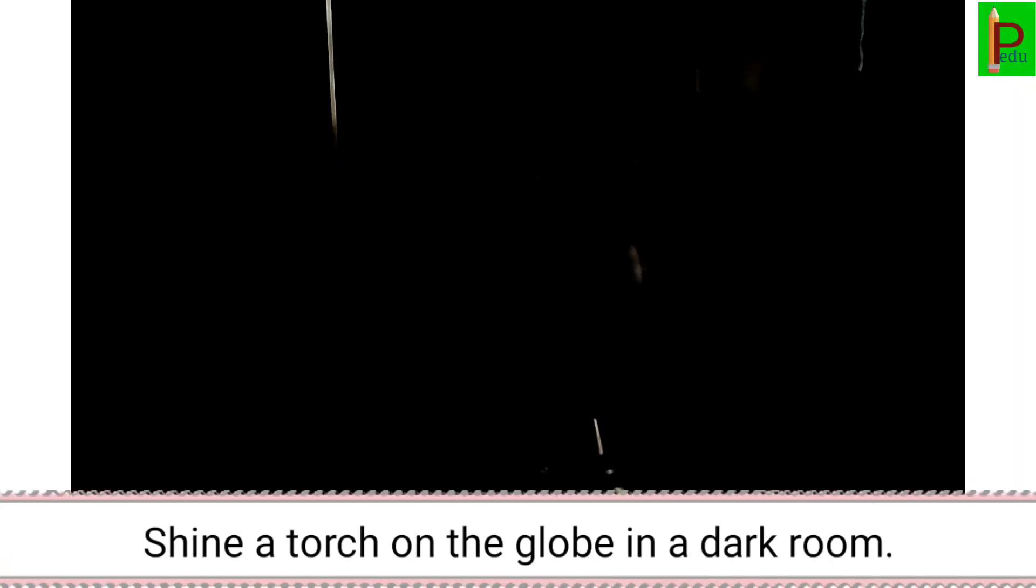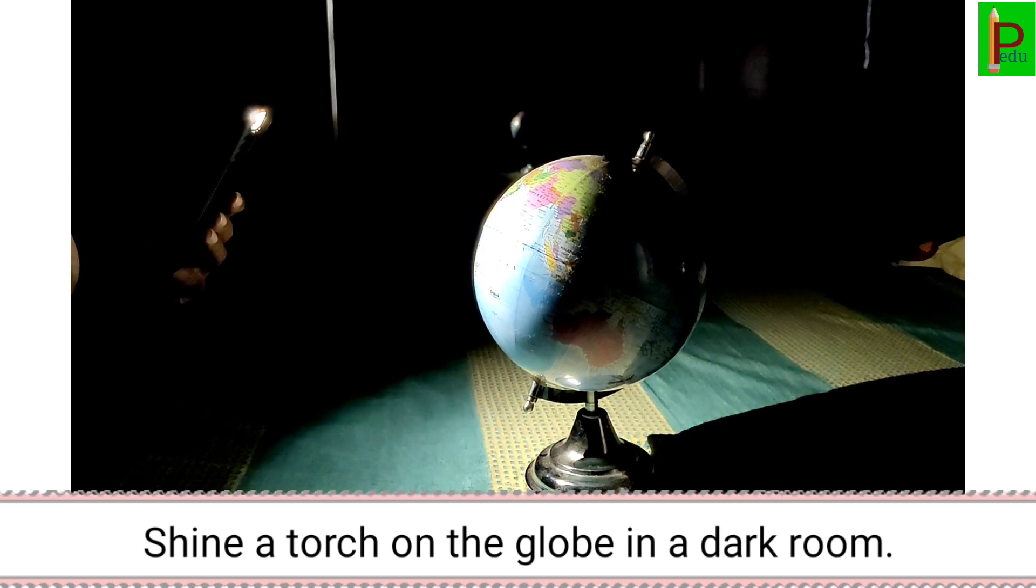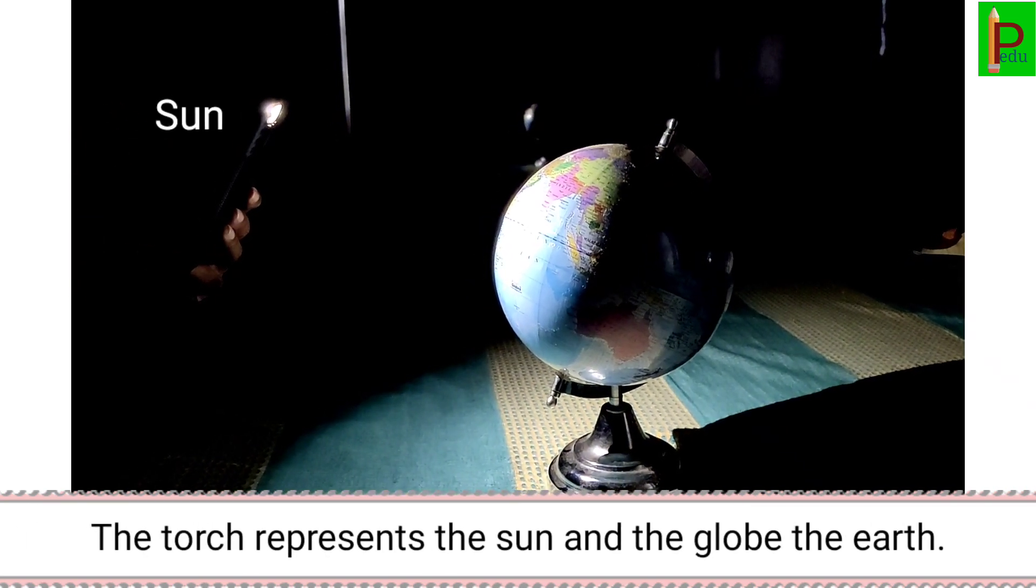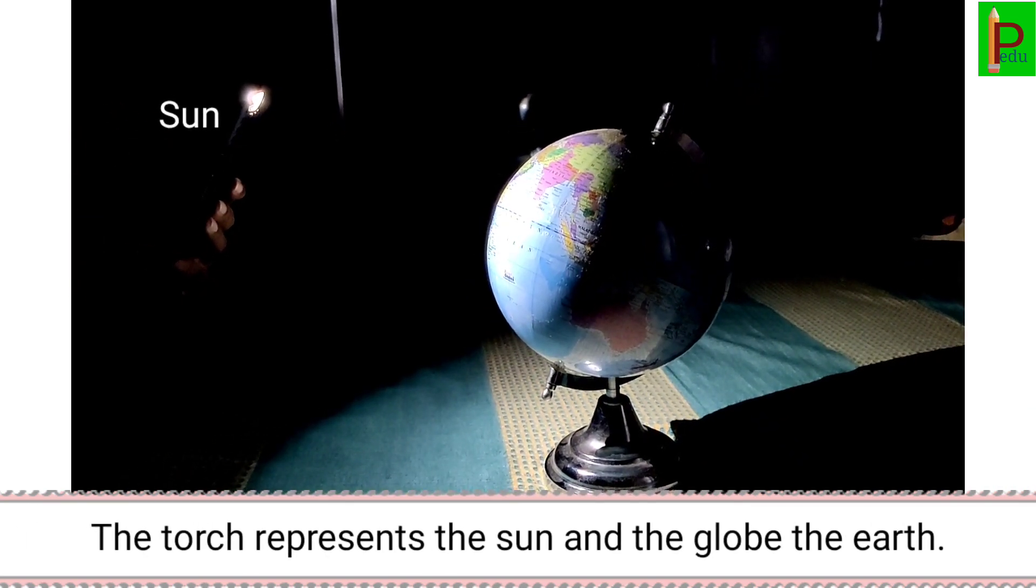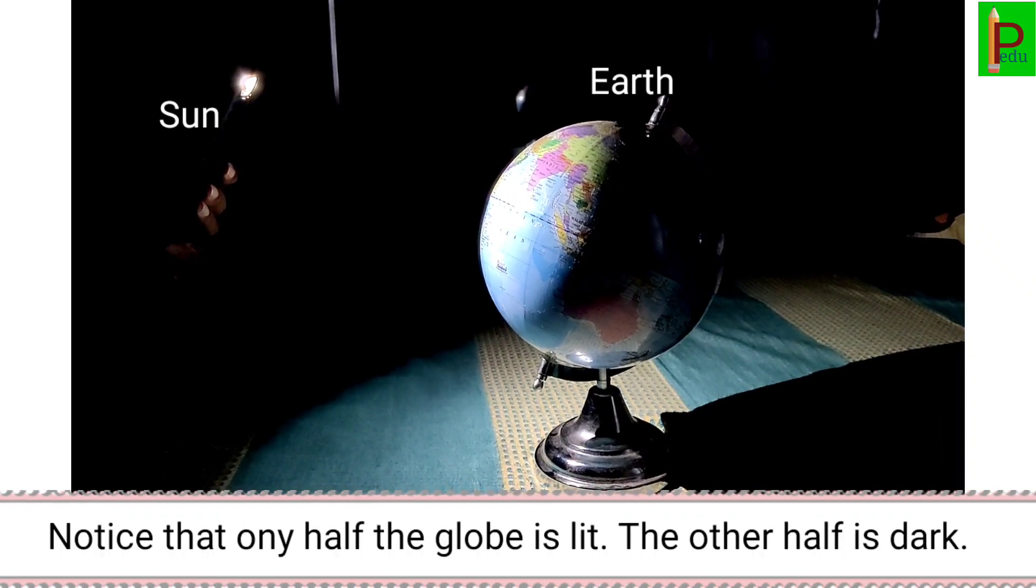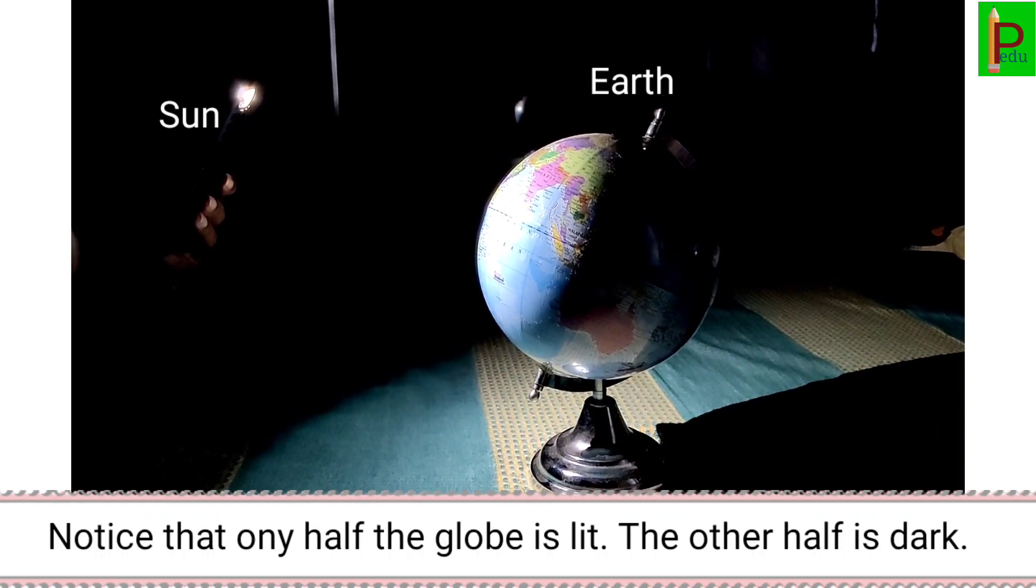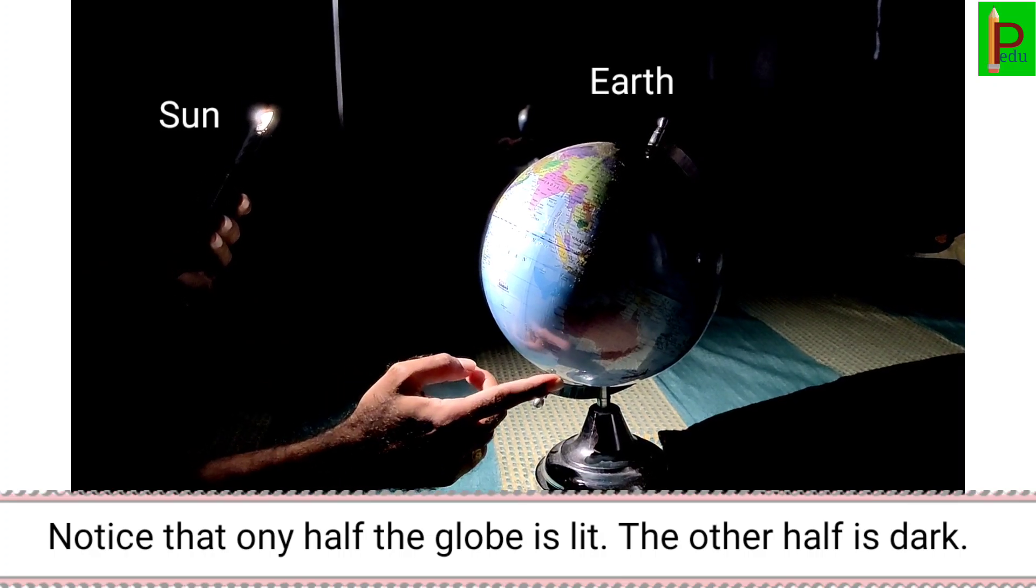Children, shine a torch on the globe in a dark room. The torch represents the sun and the globe represents the earth. Notice that only half the globe is lit. The other half is dark.